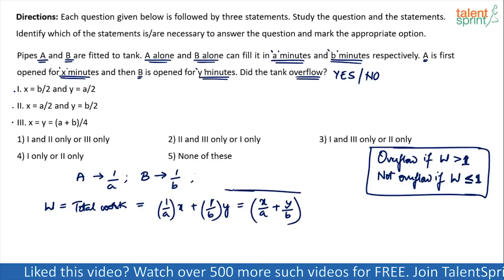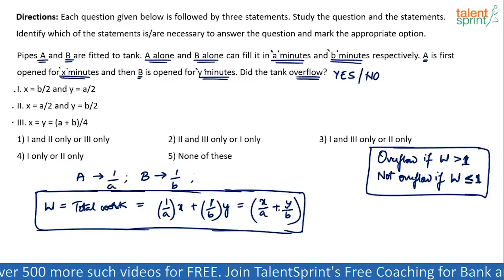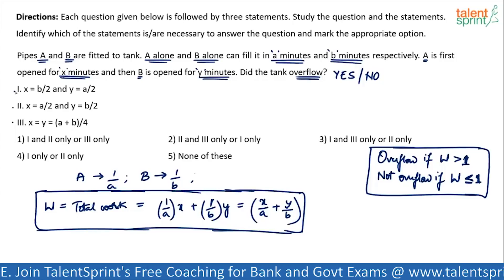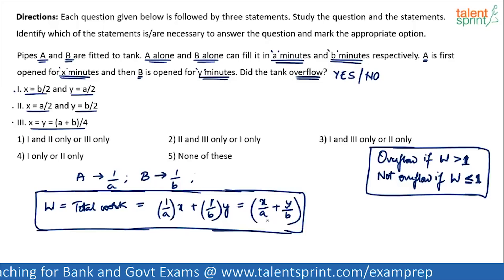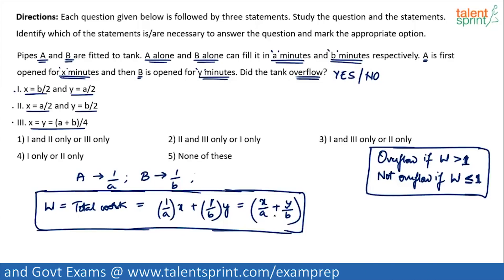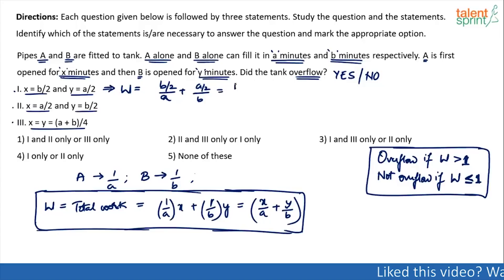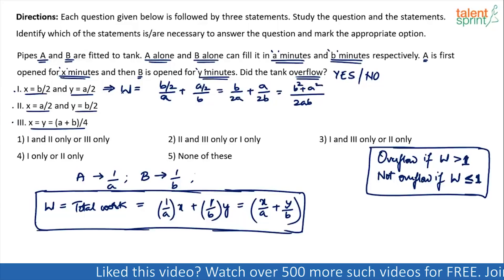We know W = X/A + Y/B. For statement 1, X = B/2 and Y = A/2. Substituting: W = (B/2)/A + (A/2)/B = B/(2A) + A/(2B). Taking LCM as 2AB, this becomes (B² + A²) / (2AB). So total work in statement 1 is (A² + B²) / (2AB).